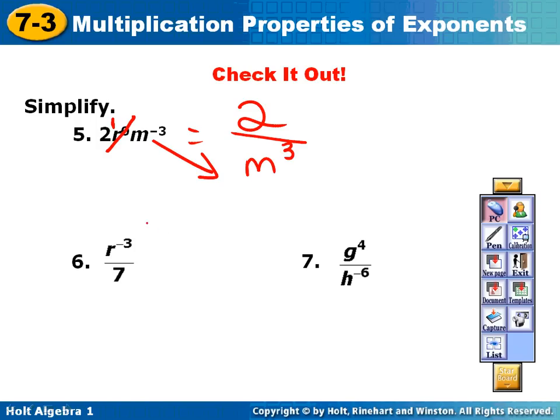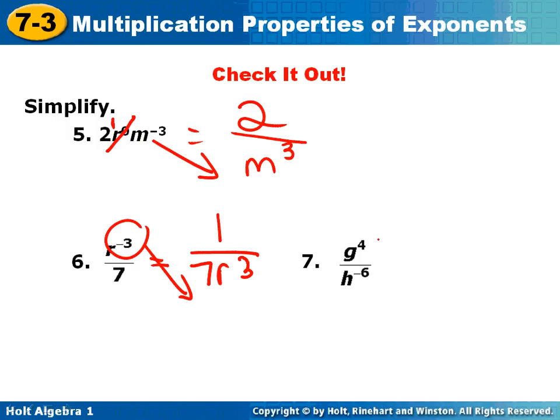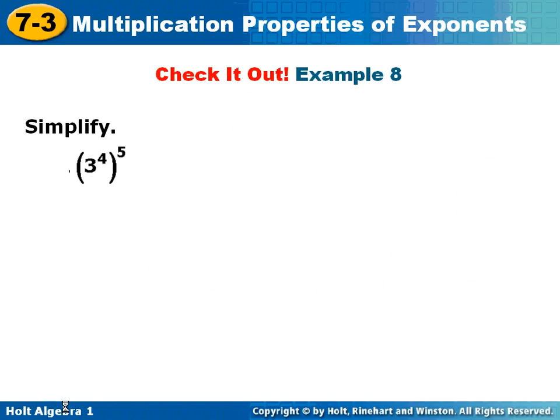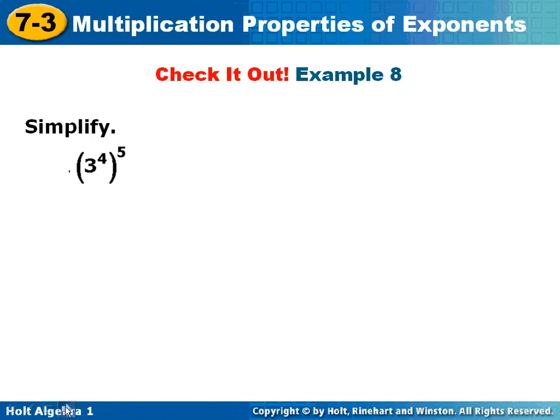Number 6. We have r to the negative 3 on the top. It has to switch to the bottom. Since the 7 is already there and it's a positive exponent, it's going to stay at the bottom also, and then we have to fill in a 1 at the top. Anytime, Alex. All right, I have to have g to the 4th on the top because it's positive. The h to the negative 6 is on the bottom. Since it's negative on the bottom, it has to switch to the top, and so that's our final answer. Number 7. Uh-oh, I think I skipped number 7.